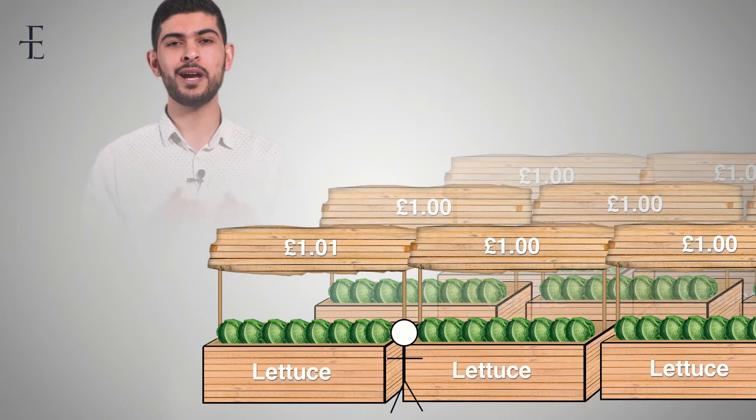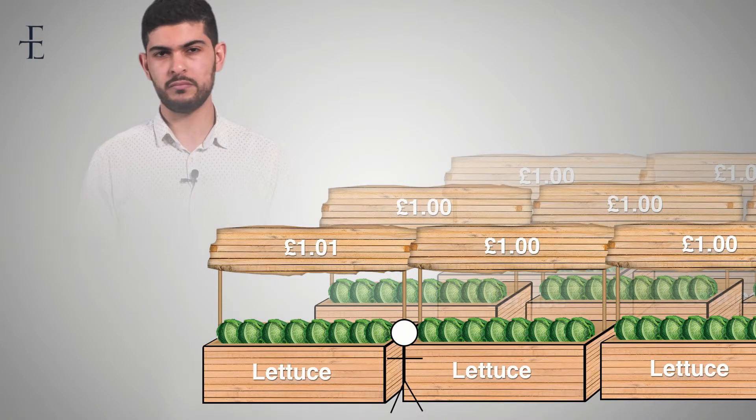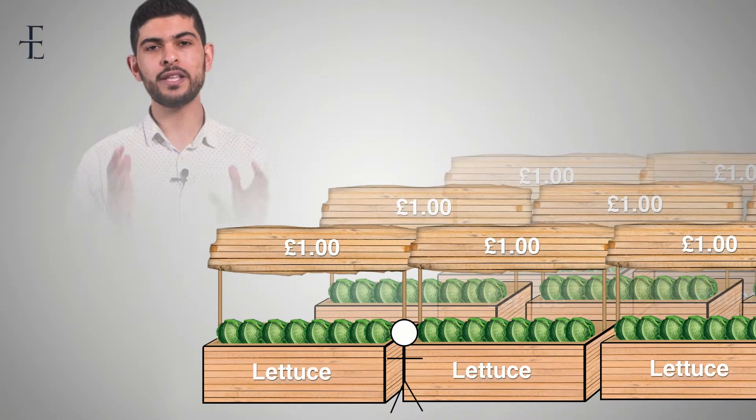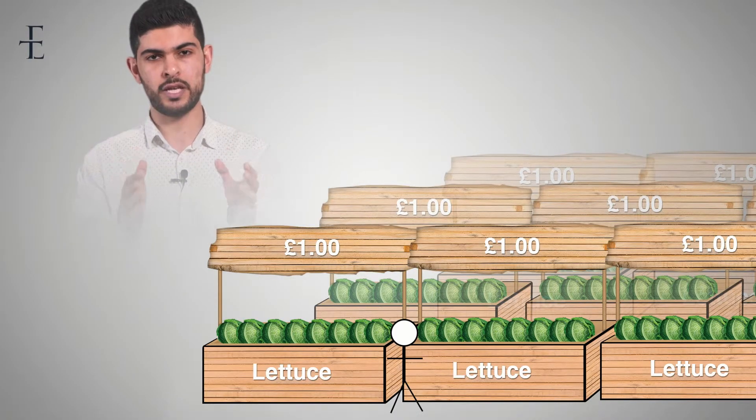Similarly, if they were to cut their price to 99p, everyone else would do the same thing and everyone would be worse off. So they wouldn't do that either. The reason to remember that they are price takers is simply because the good they're selling is identical — it is homogeneous — and there is perfect information. That is why they are price takers and why, if operating in perfect competition, they have no bearing at all on the price.